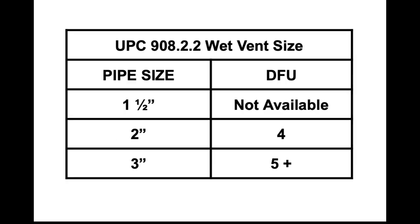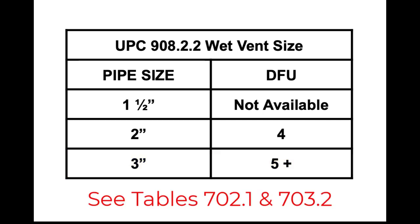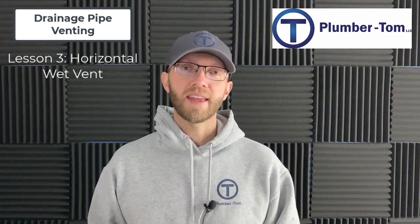For the Uniform Plumbing Code, wet vent sizing comes from section 908.2.2. There is no table in the code, but here it is in table form. One-and-a-half inch is not an option — the wet vent shall be not less than two inches in diameter for four drainage fixture units or less, and not less than three inches in diameter for five drainage fixture units or more. Drainage fixture unit information is found in table 702.1 and sizing table 703.2.